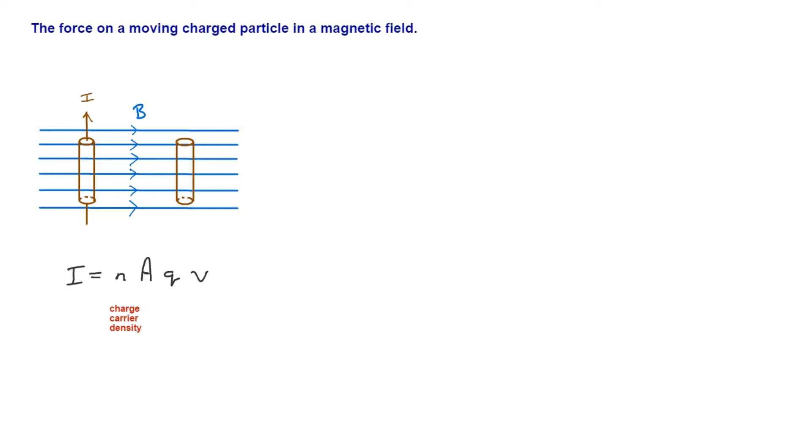N, remember, is the charge carrier density. So it's the number of charge carriers per unit volume in the wire. A is the cross-section area of the wire. So that's straightforward. And Q is, of course, the actual amount of charge on the charge carriers. And finally, then, V is, if you remember, the drift velocity. So the average rate of progression of the charge carriers along the wire. In this case, of course, it's electrons. So we're going to have a charge E. But it could be if it was some other ions or something. We keep the equation general with a Q.